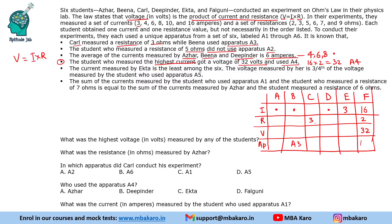So the student with 16 amperes uses A4 and gets 32 volts. The remaining current is 10, giving a voltage of 30, apparatus still unknown. We've filled those entries. Now, Ekta has current 3 and her voltage is three-fourths of the A5 student's voltage. We are yet to find who uses A5, but let us use Ekta's current of 3.